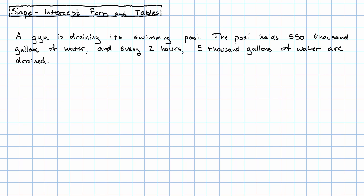So if t is the number of hours that have passed, and that'll be our independent variable, and w is the thousands of gallons of water in the pool, and that'll be our dependent variable.